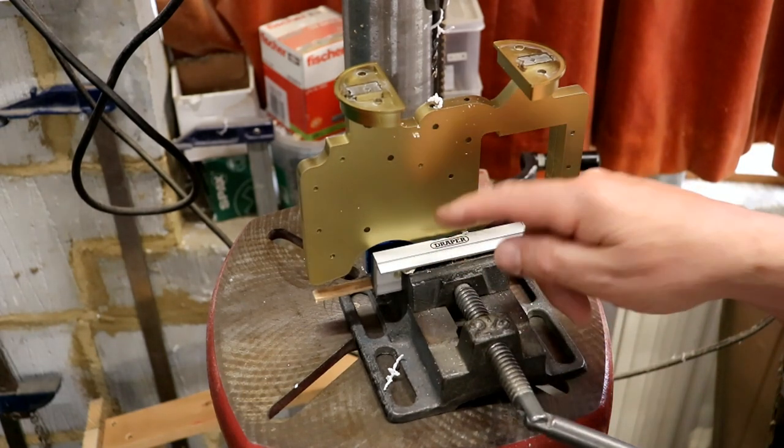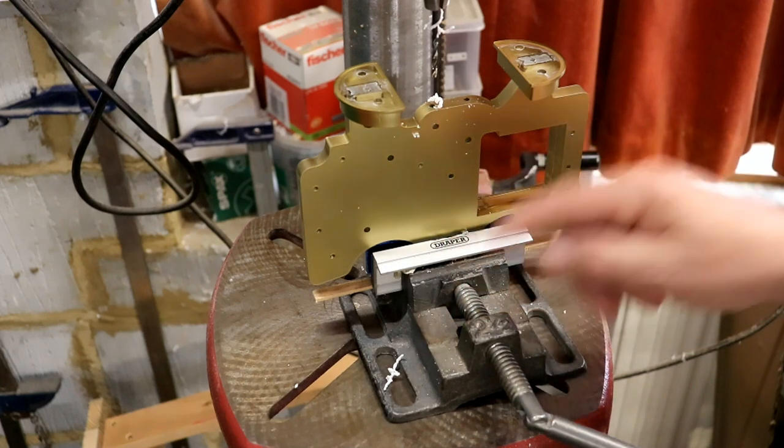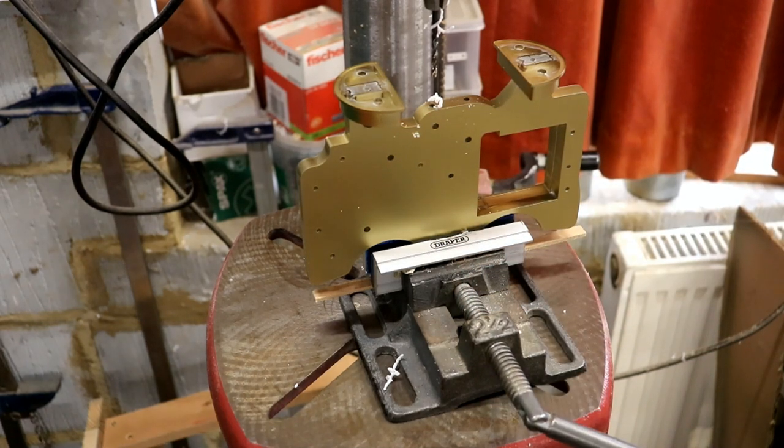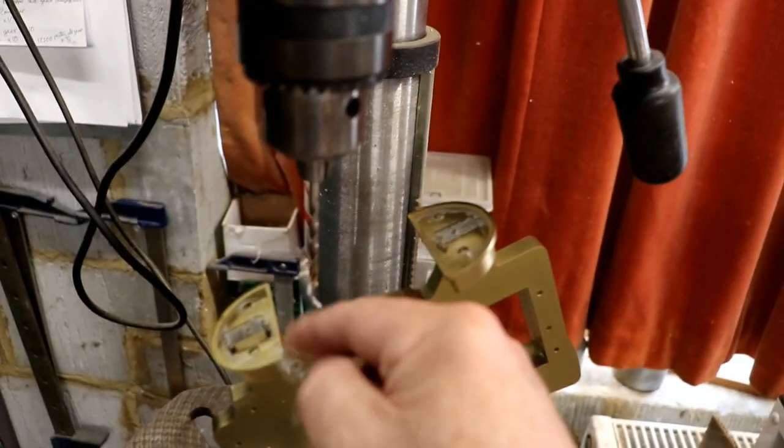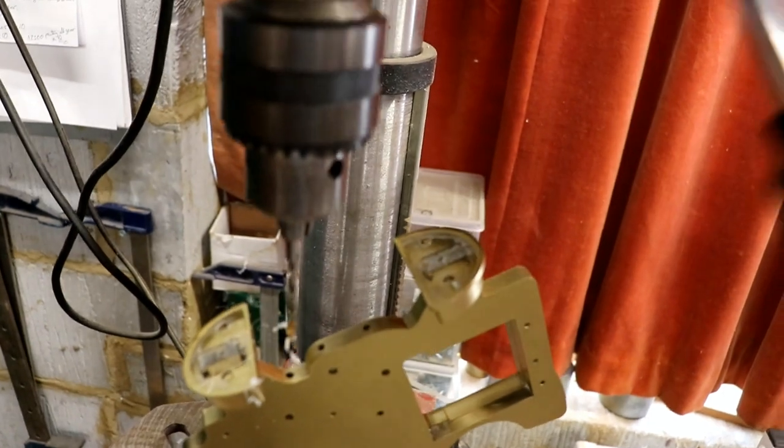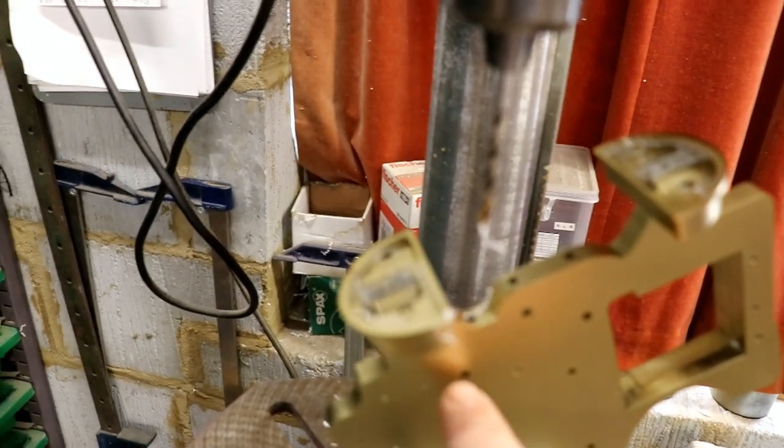Luckily I found though, my Draper magnetic rubber covered jaws fit onto the horrible machine vise. Excellent. I've also had a cunning plan. This is a 4mm drill. So I'm drilling halfway down the hole.